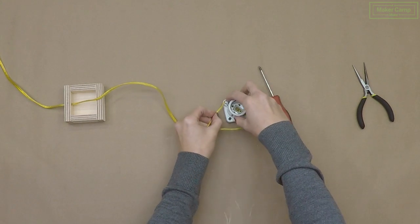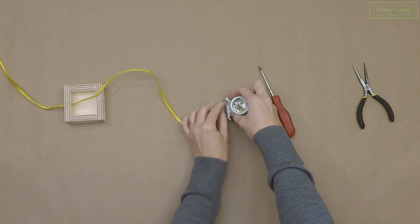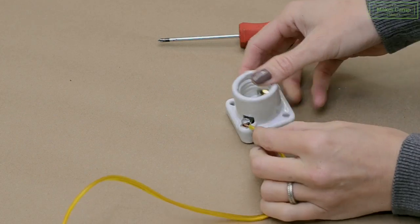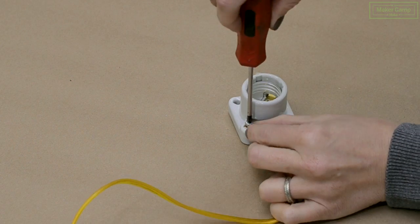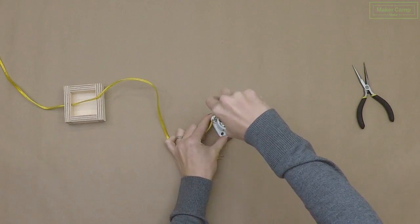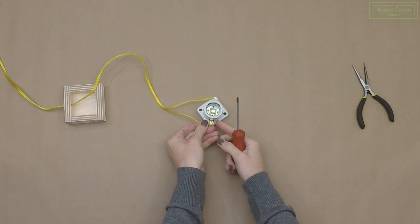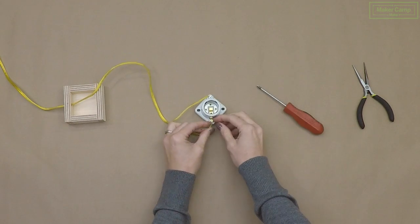Most lamp sockets will have a brass screw and a silver toned screw. The brass screw is for your hot wire and the silver screw is for your ground wire. Put your wires in place and screw them down very tightly.